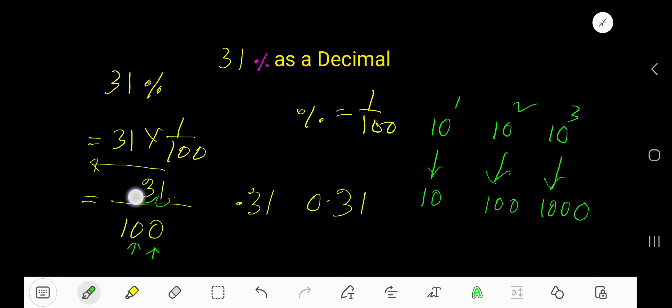Move 1, 2. So we are getting 0.31. You can add another zero here to show that this is less than 1. This is the answer.